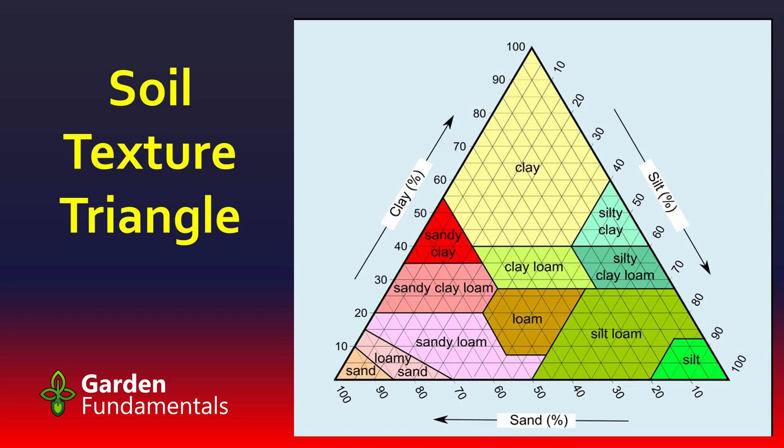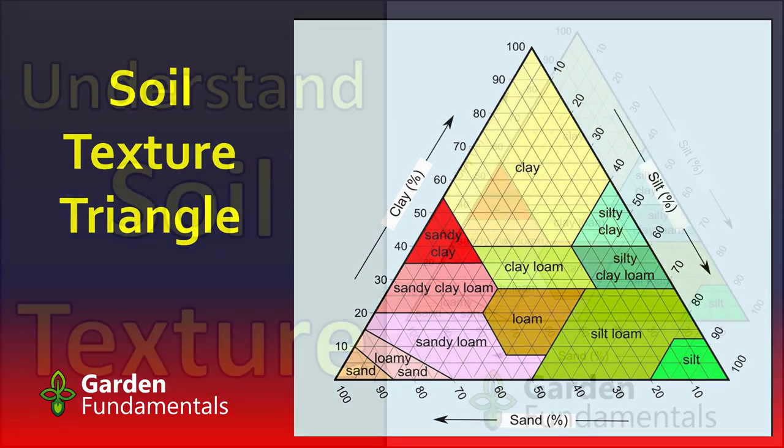Once you know your numbers you can calculate what type of soil you have using a soil texture triangle, pictured on the right. Once you know your numbers, just follow those lines across. Ideally we want to be in the middle of that triangle — clay loam, which is ideal garden soil. But none of us have that. You're going to be in one area or another, with too much clay, sand, or silt, and that gives you an idea of what problems you might have and how to address them.